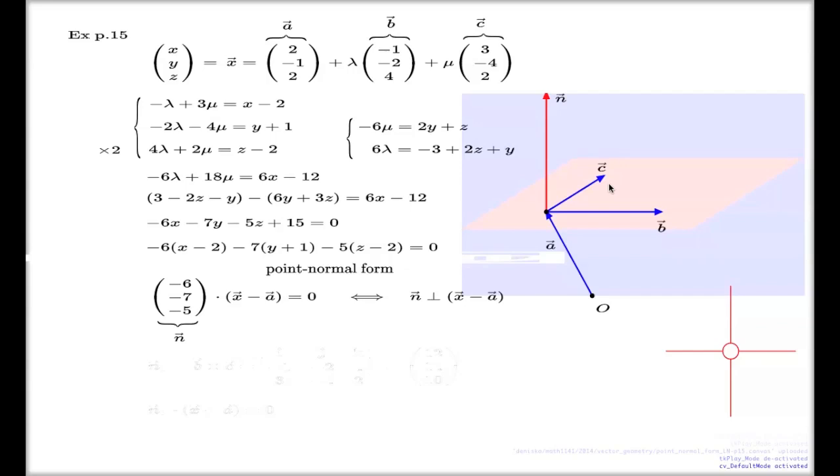And that's another way of conversion of the equation of the plane, vector equation of the plane, into the Cartesian form. Rather than doing this solution thing, you can use the cross product for that. By finding the cross product of b and c, and that will be your normal vector. So here it is. Let's just try to do that for this question.